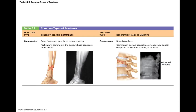Common types of fractures include the comminuted fracture, where you have lots of bone fragments in many tiny little pieces. This is common in the elderly whose bones are more brittle, resulting in lots of tiny loose pieces of bone.